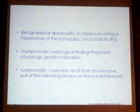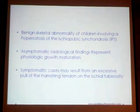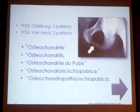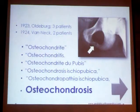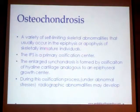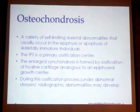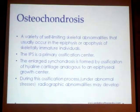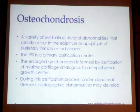Mostly it is asymptomatic — an incidental finding — which represents physiologic cross-maturation. Symptomatic cases may result from excessive pull of the hamstring tendon on the ischial tuberosity, similar to the excessive pull of the patellar tendon on the tibial tuberosity. Osteochondroses are a group of self-limiting skeletal abnormalities that usually occur in the epiphyses or apophyses of skeletally immature individuals. The ischiopubic synchondrosis is considered a primary ossification centre, making it susceptible to such abnormalities.